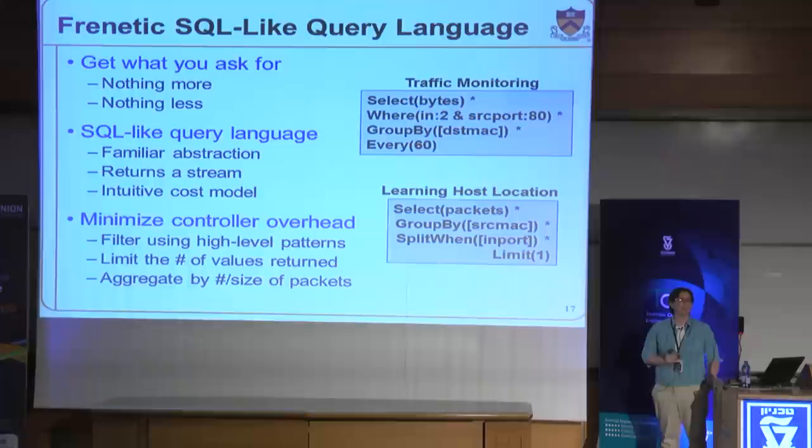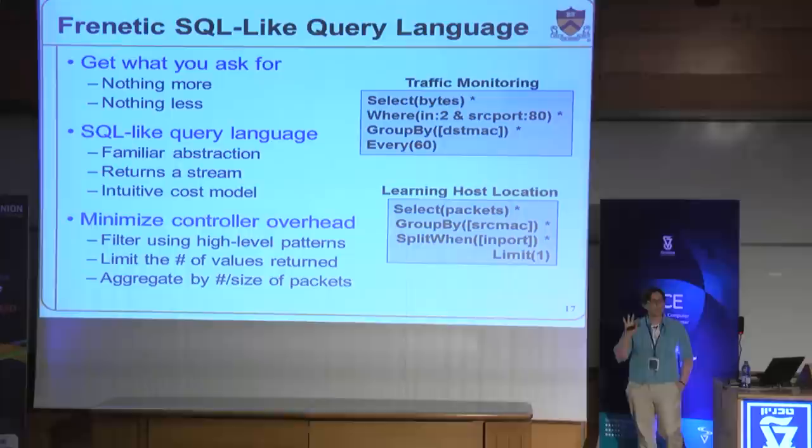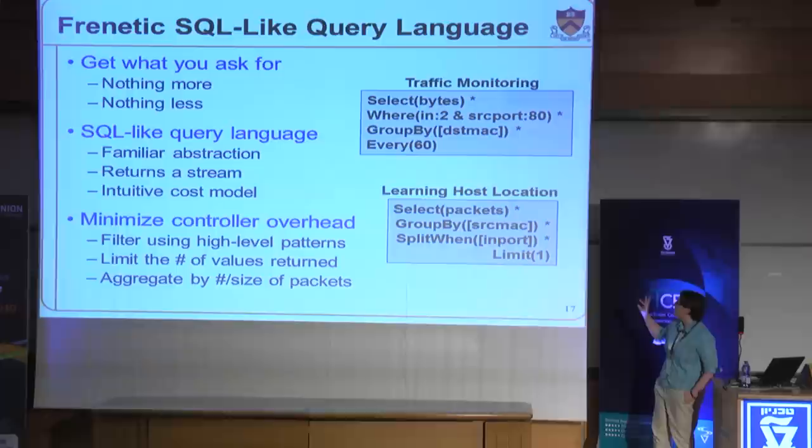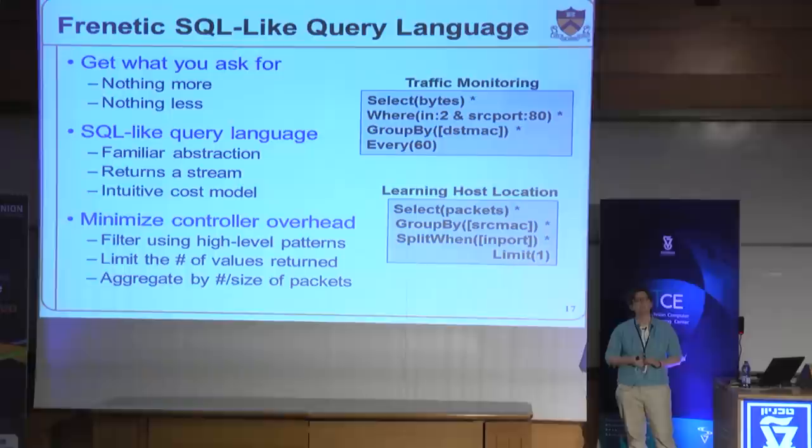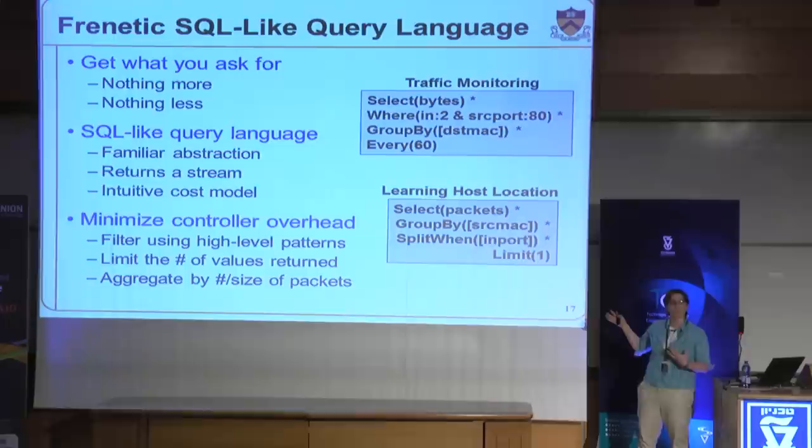That's the first part of Frenetic — providing a query language that allows the programmer to outsource to the underlying runtime system the details of getting the statistics they need. These queries always work even if there are other things going on in the network, like other queries from other program modules wanting to see different subsets of traffic, or policies installing rules to take forwarding actions on packets.